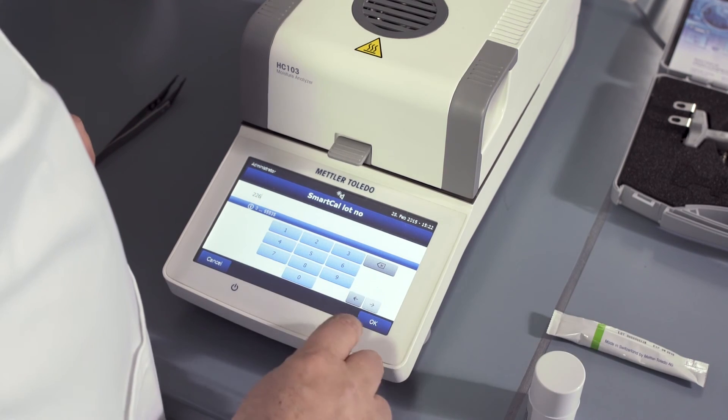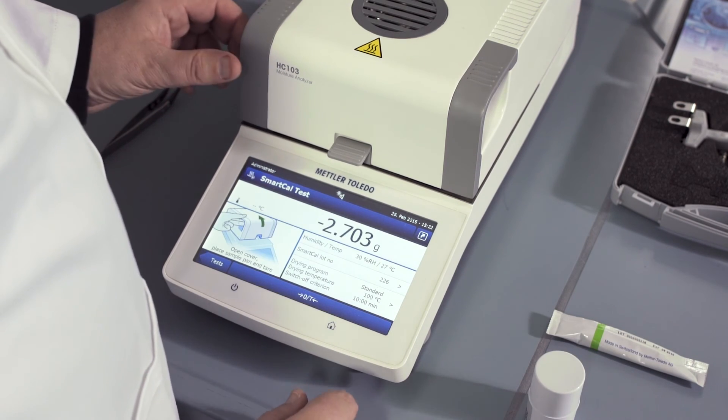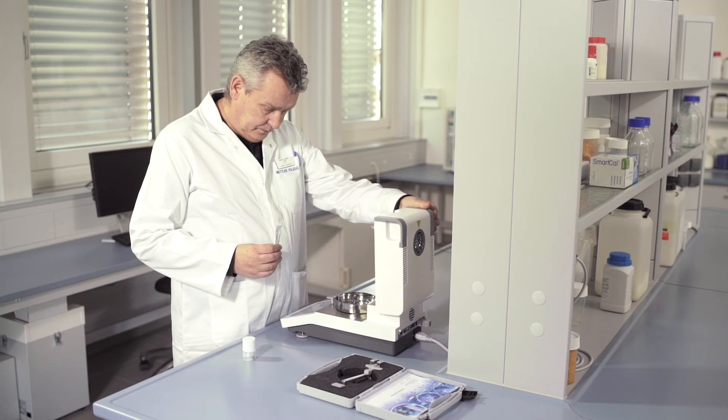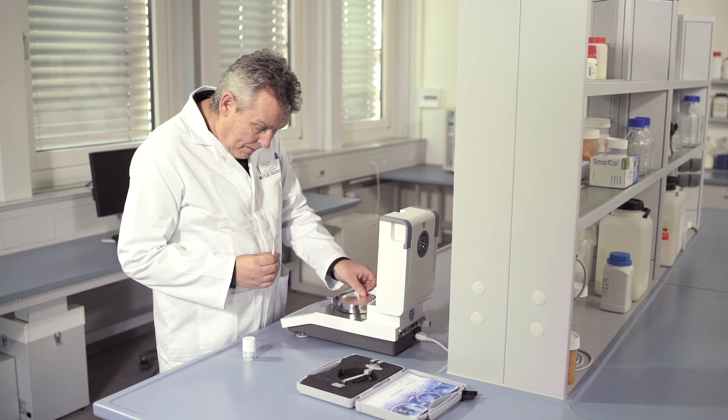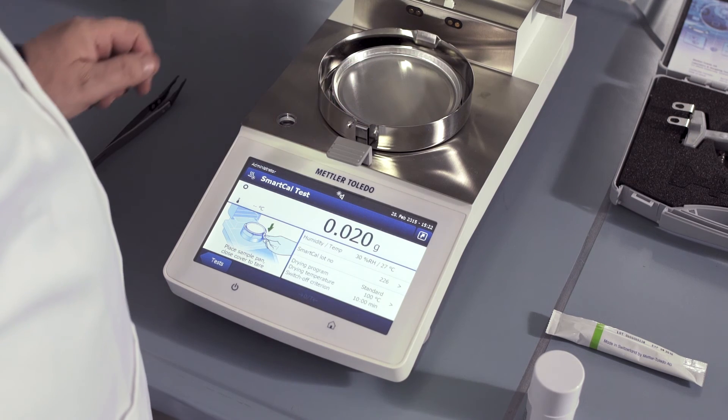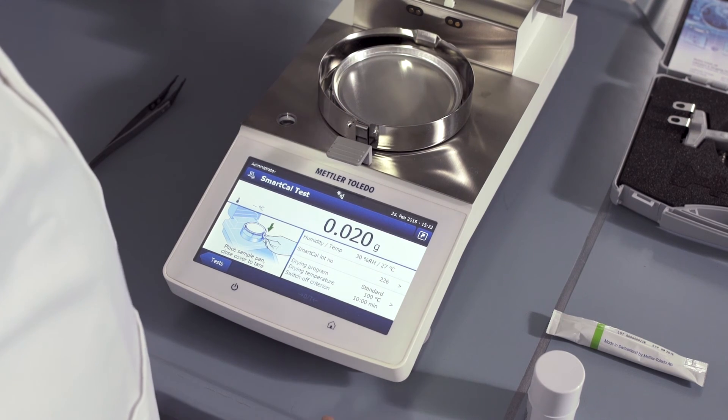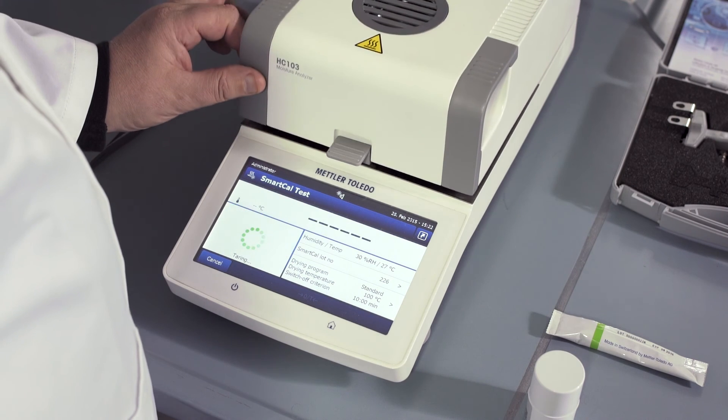Then proceed as with a normal measurement. Open the lid, place an empty aluminium pan, and close the lid to perform a tare.